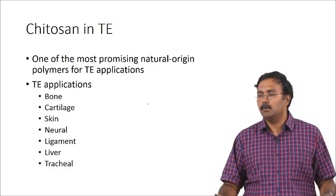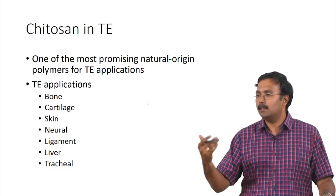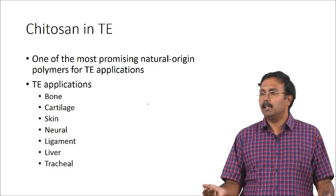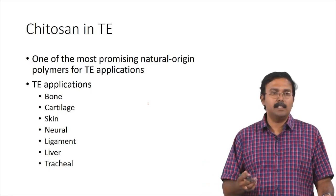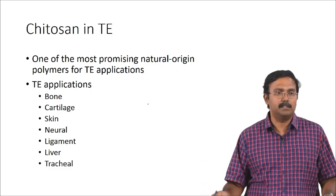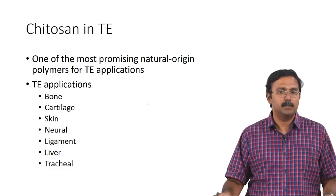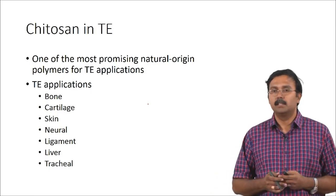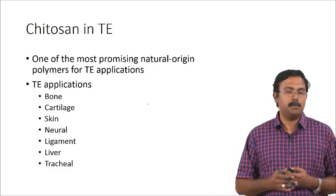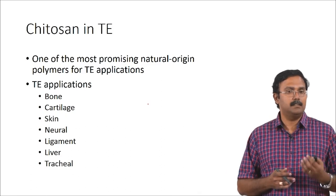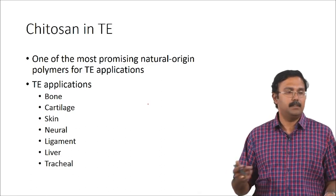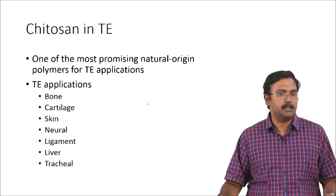If you are trying to emulate and mimic the ECM, you cannot just use one material and think that will give you the exact property of the ECM. Different things which people have worked on are skin, neural, ligament, liver, and tracheal tissue engineering.